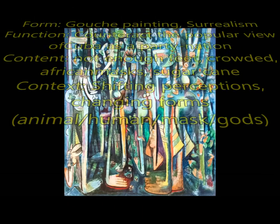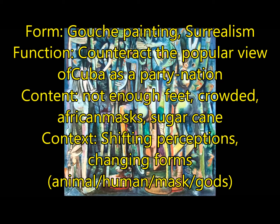For number 142, it's going to be called The Jungle by Wifredo Lam. This is a gouache painting — gouache is kind of a mix between watercolor and acrylic — and this is considered surrealism. For function, this is to counteract the popular view of Cuba as a party nation. Americans were wanting to go to Cuba to party in Havana, but this artist is saying, that's not our culture, that's the way you're viewing us. He shows that with his content: there are not enough feet for the figures, it sits too crowded, he uses African masks instead of faces, and he also includes sugar cane — a major crop grown in the area — to say, this is how our life really is, and this is our actual national identity.